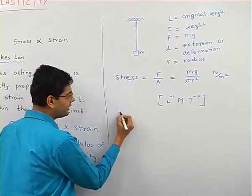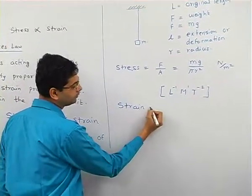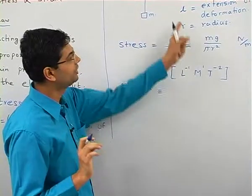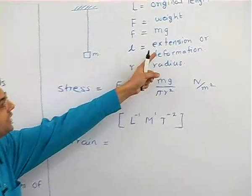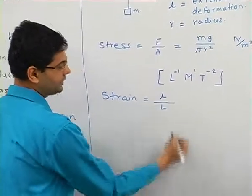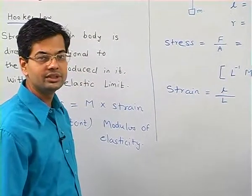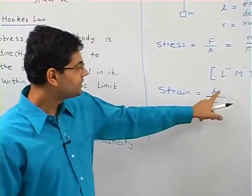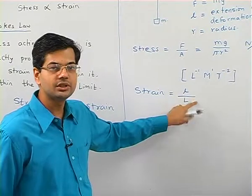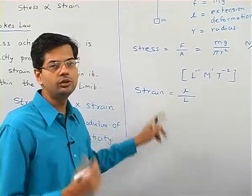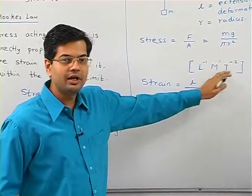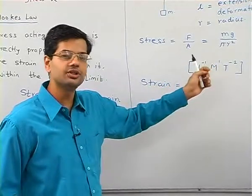Strain is the change in dimension divided by the original dimension. Here, small l is the extension or deformation produced, so strain equals small l divided by capital L. Since both numerator and denominator are lengths, strain has no dimensions or units — it is represented as L⁰ M⁰ T⁰.